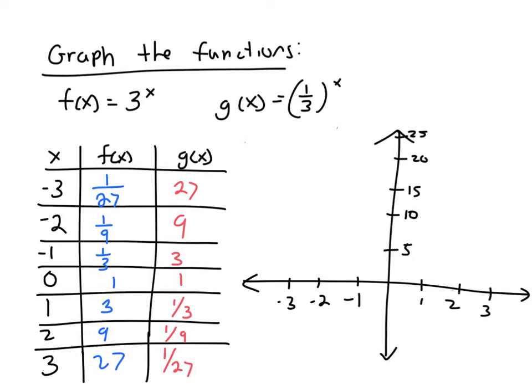So starting with f(x), when x is -3, f(x) is really small. And then when x is -2, f(x) got a little bigger, but it's still really small. And then when f(x) is -1, it's a little bit bigger, but still less than 1. And then when it's 0, it's 1, which is like maybe about right here.